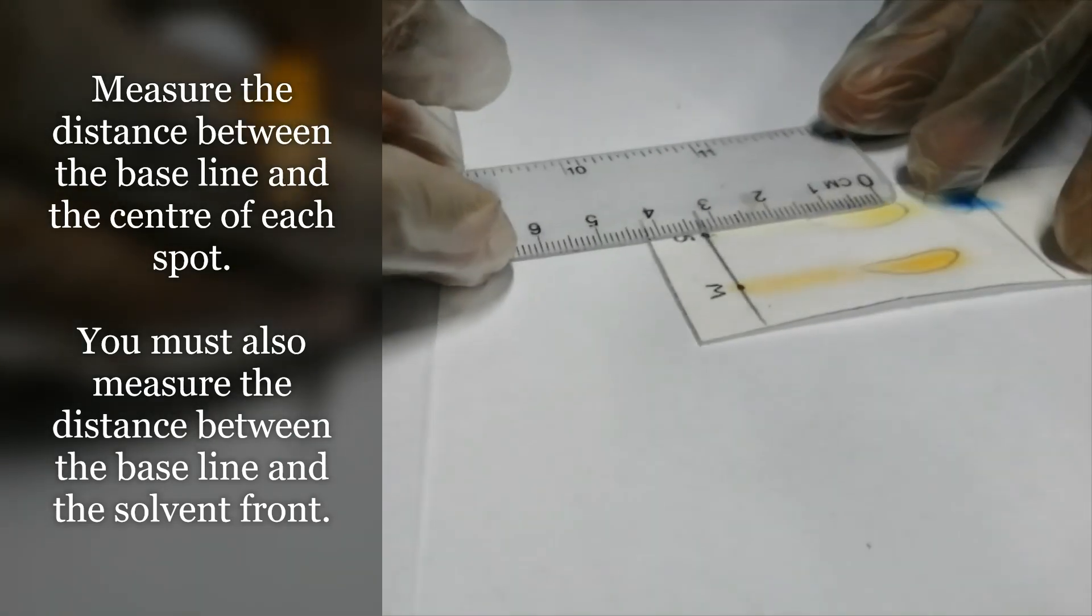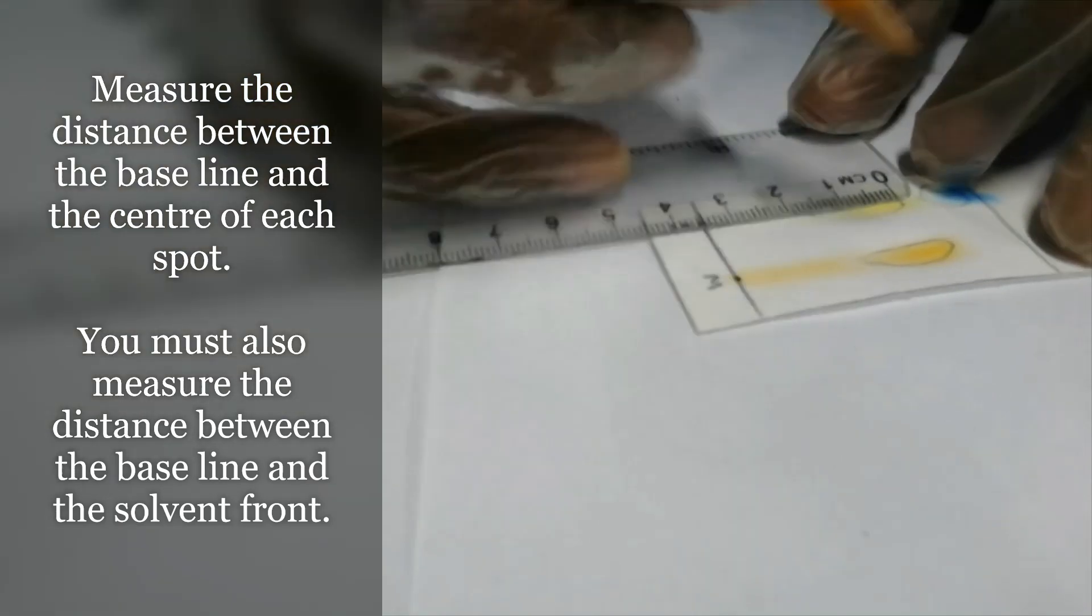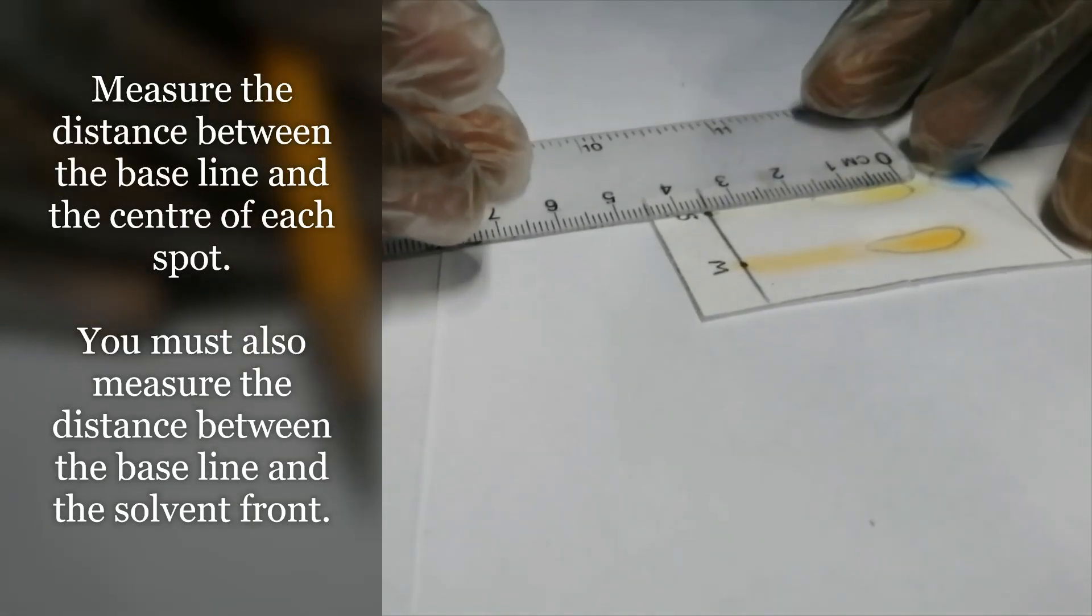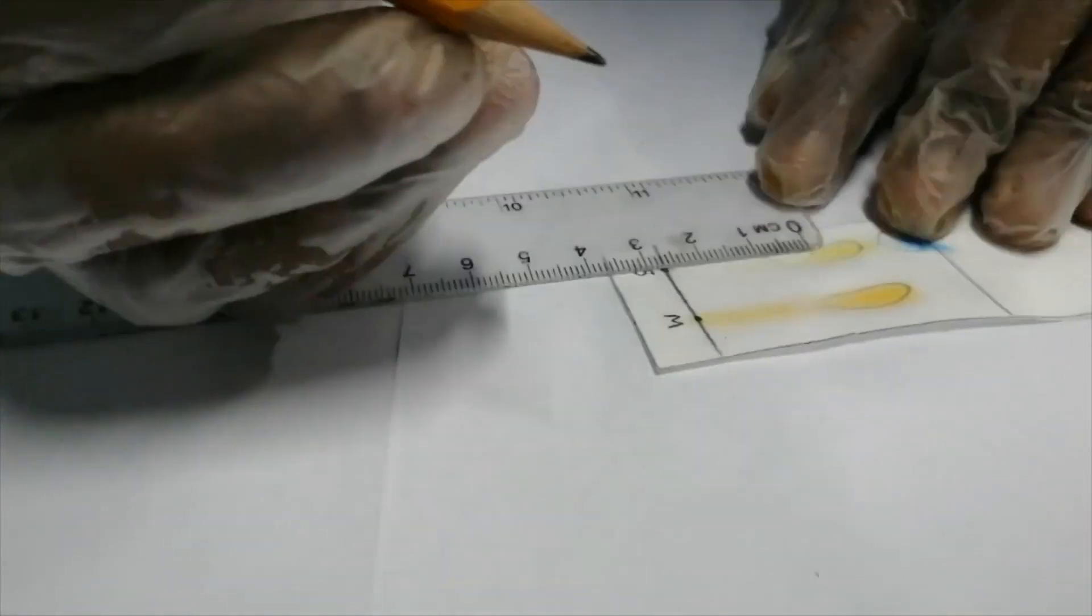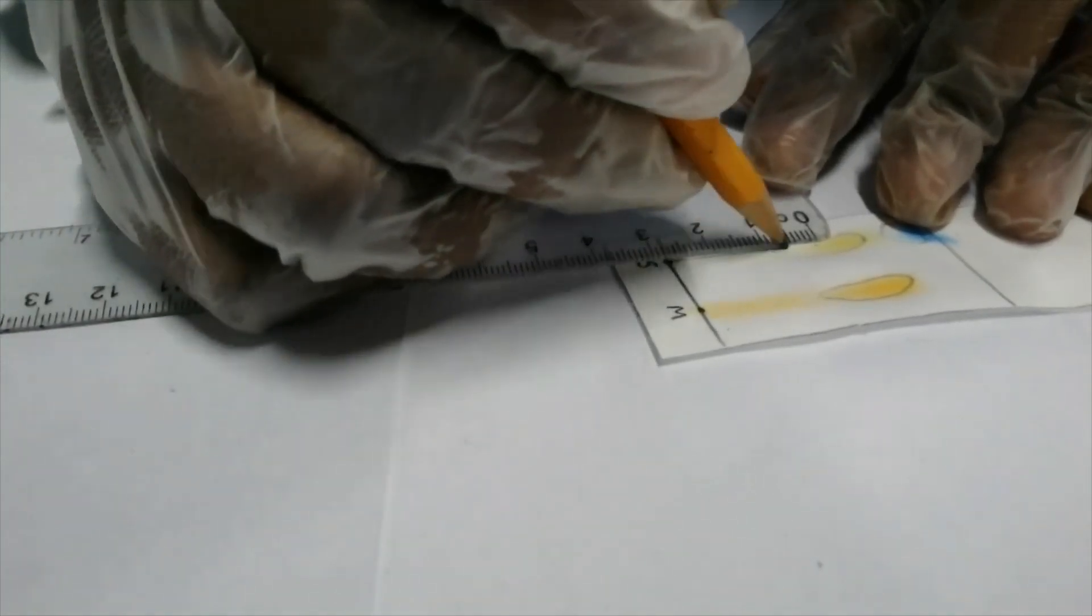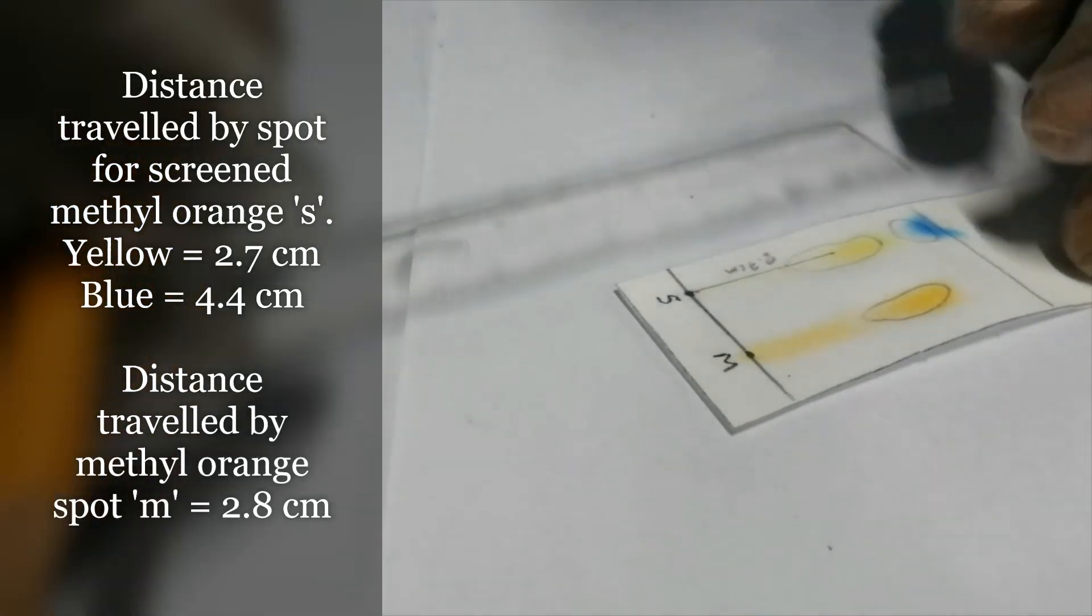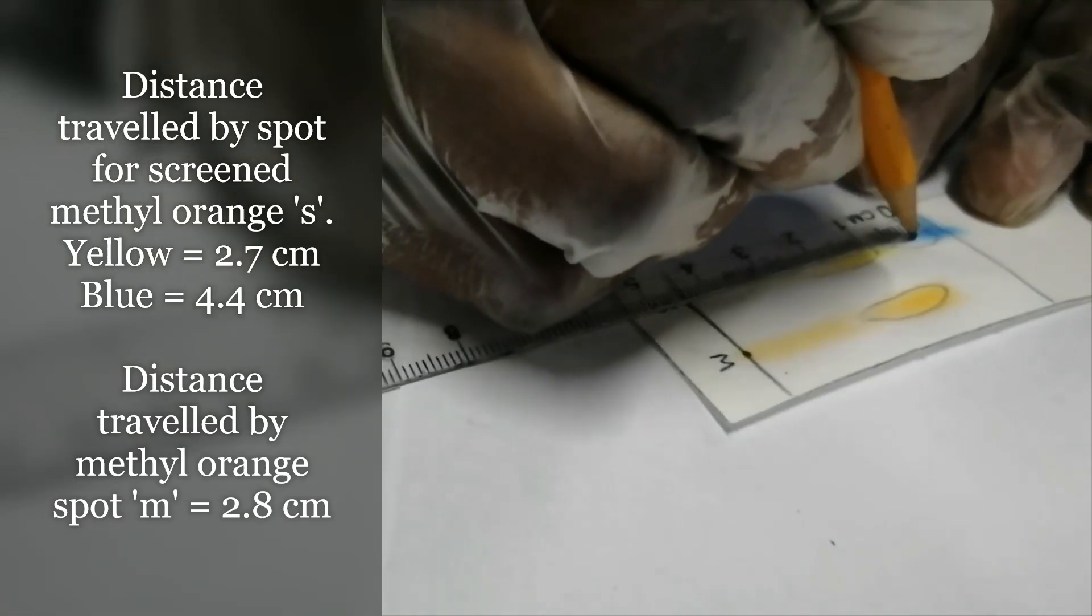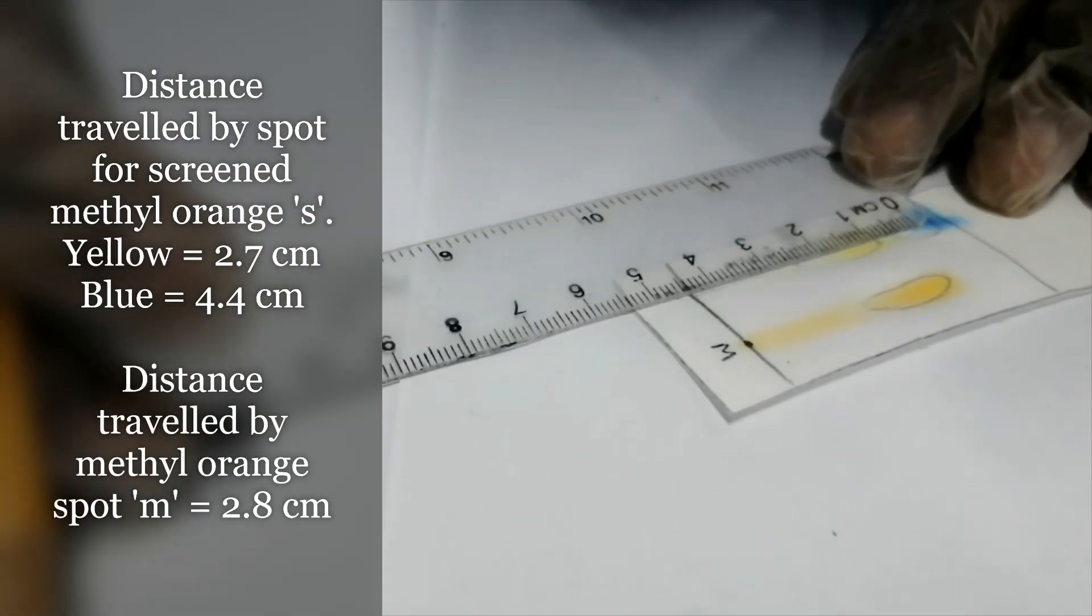We need to find the distance from the center of the spot to the baseline. Some students are very precise and measure the diameter of the spot and divide by two. For the green methyl orange we have 2.7 centimeters traveled by the yellow spot, and for the blue spot, the center is here, so it's equal to 4.4 centimeters.